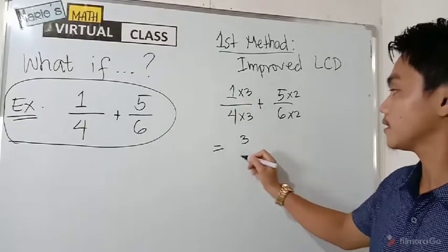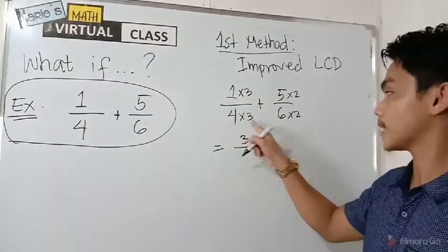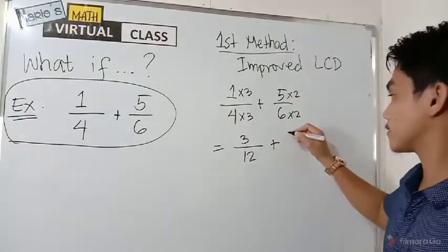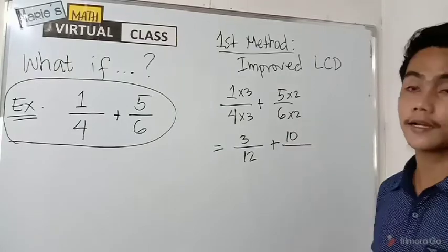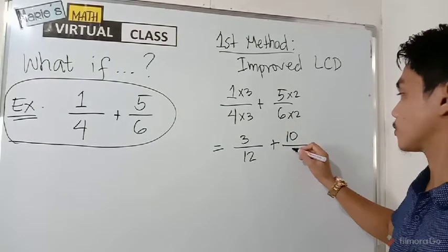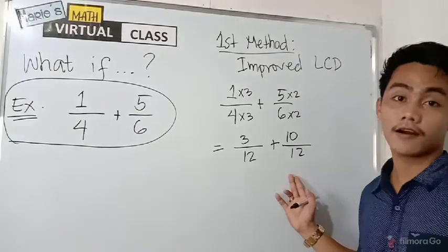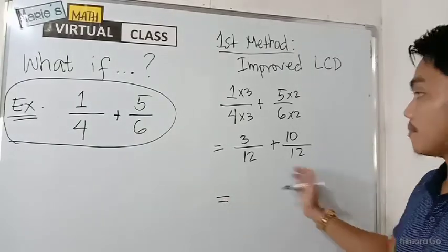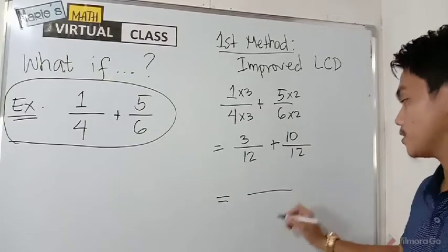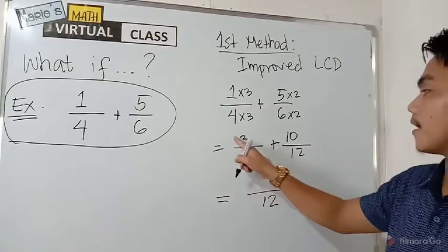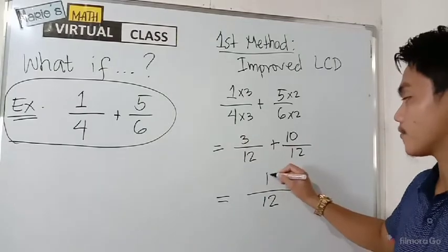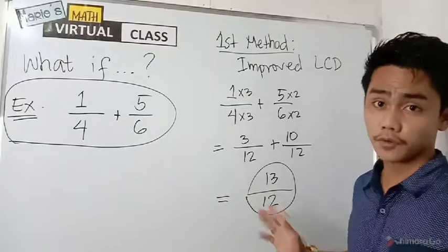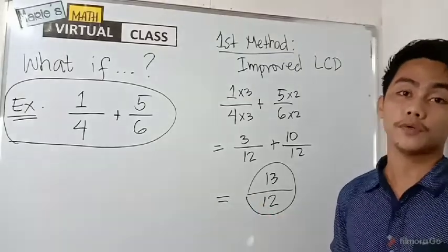So let's have the answer. One times three is equal to three over four times three is equal to twelve plus five times two is equal to ten over six times two is equal to twelve. Look at these fractions now. They are similar. So in this sense, we can now combine the two. Since they are similar, copy the common denominator and then add the numerator. Your final answer is thirteen over twelve and thirteen over twelve or thirteen twelfths is in lowest term already.